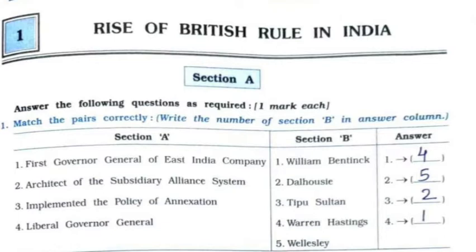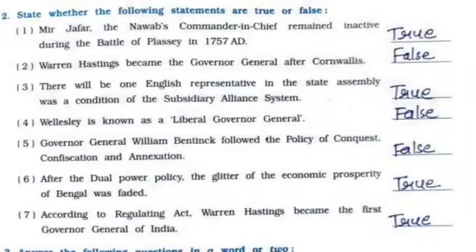Third: Implemented the policy of annexation — option number two, Dalhousie. Fourth: Liberal Governor General — option number one, William Bentinck. Now question number two: True or False.